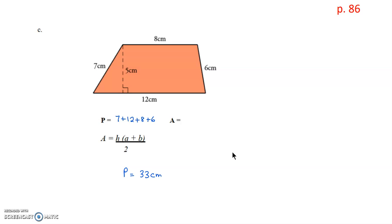For the area, we are going to use the formula height times the bases that are added together, divided by 2. We can see that our bases are the ones that are parallel. So for this trapezoid, the parallel sides are 8 centimeters and 12 centimeters. And the height is coming from the right angle, so the height is 5 centimeters.